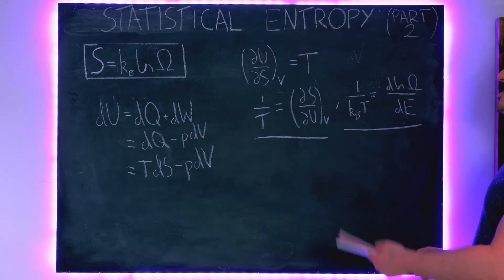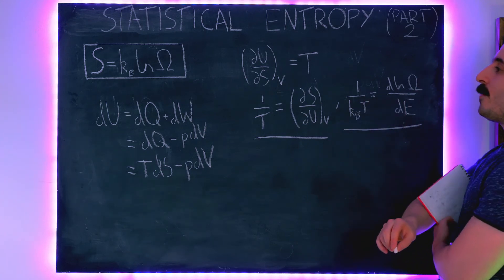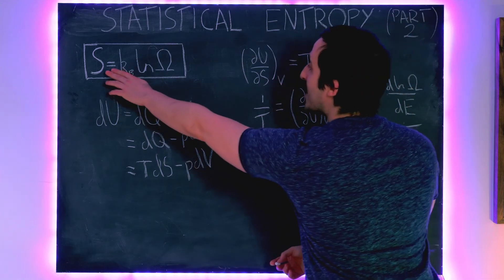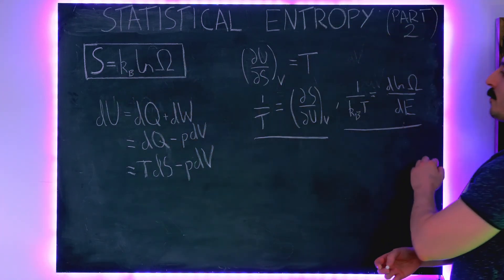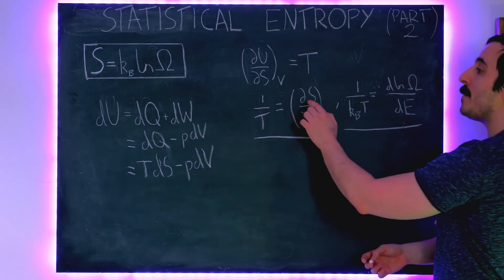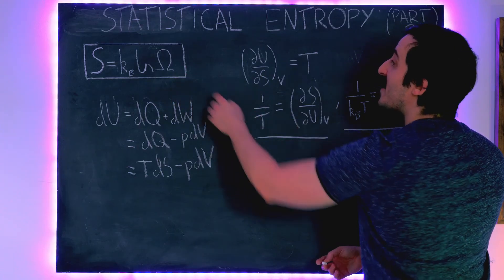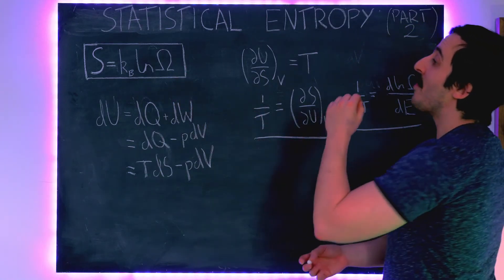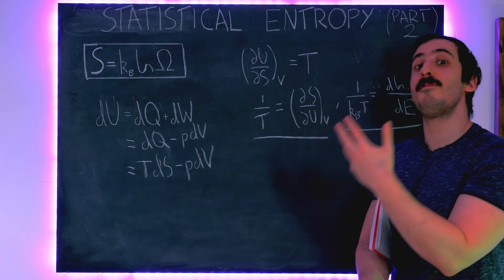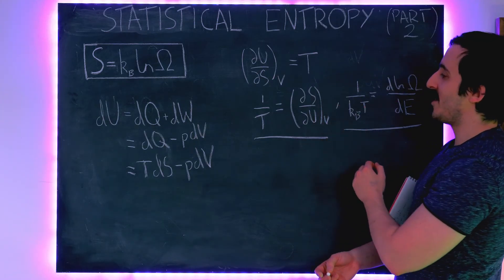So all that's left to do is compare these two and hopefully you can see that that motivates the choice that S is equal to kB ln Ω right because these are both related to temperature we can make this immediate jump to get this definition of entropy and that is the proof of how the statistical definition of entropy in terms of the number of microstates is the same as the thermal definition of entropy which was equal to dQ over T.